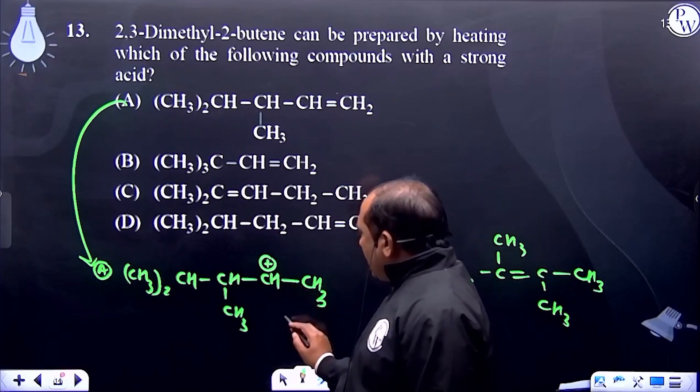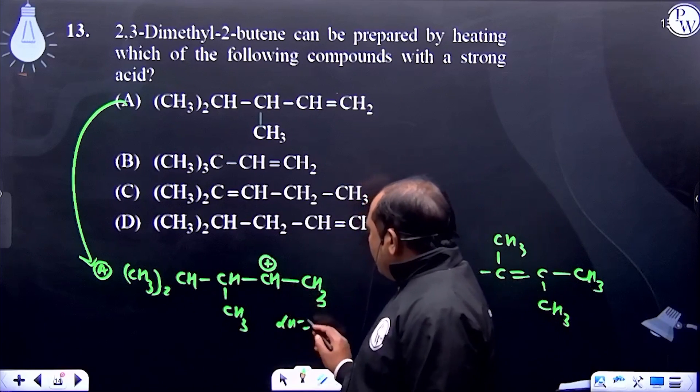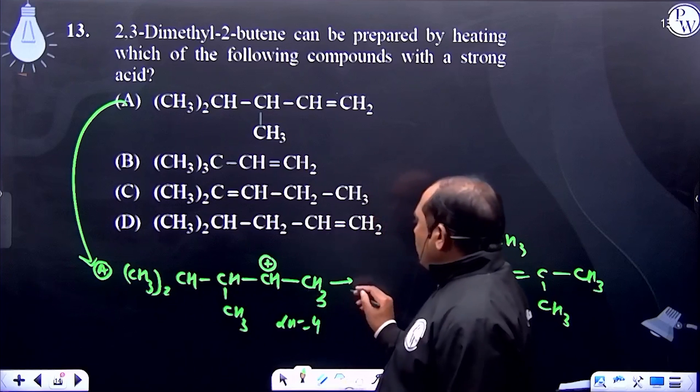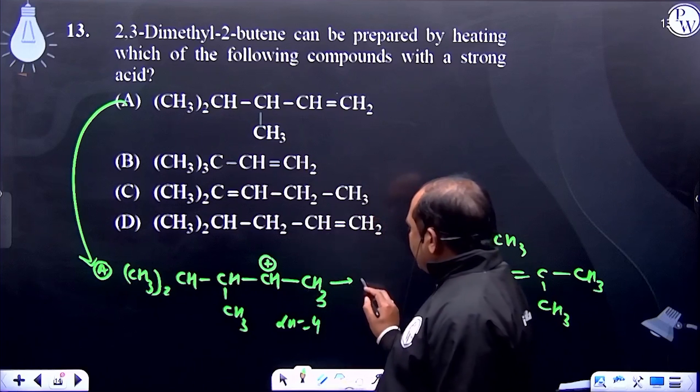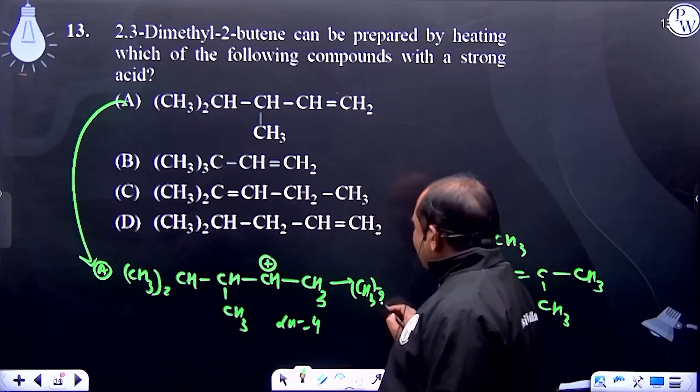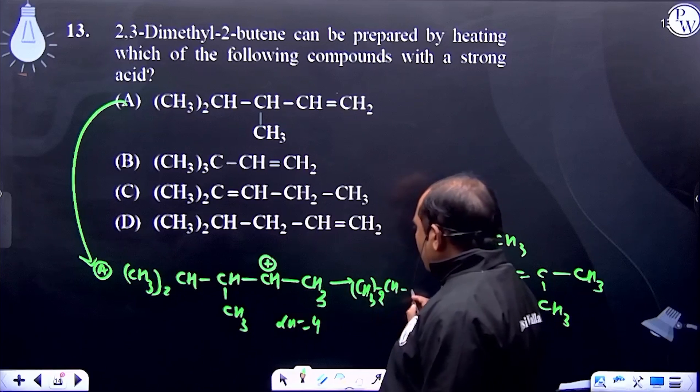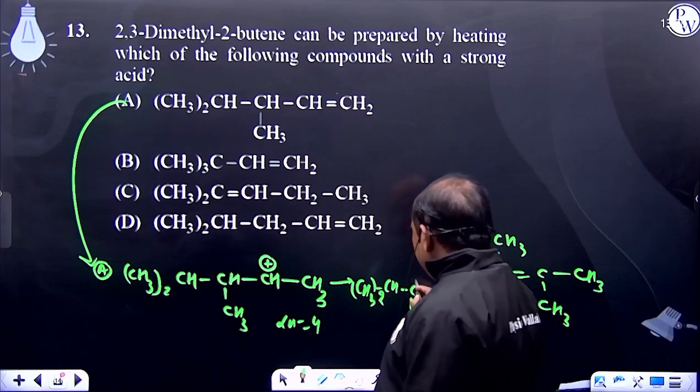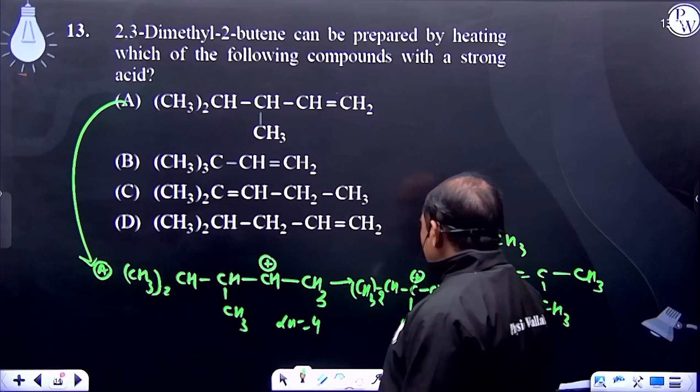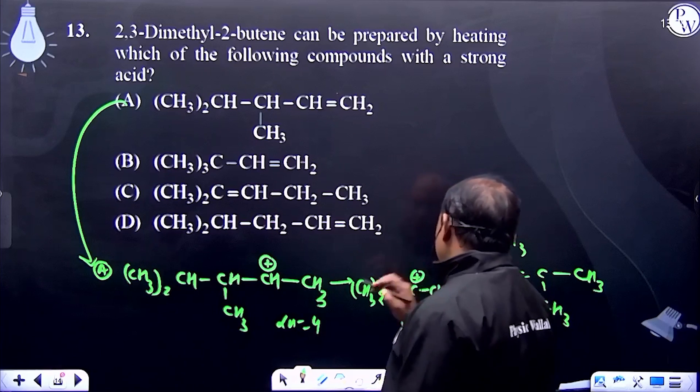This is a two-degree carbocation having four alpha hydrogens. After rearrangement, 1,2-hydride shifting gives (CH3)2CH-C+ with CH2CH3.